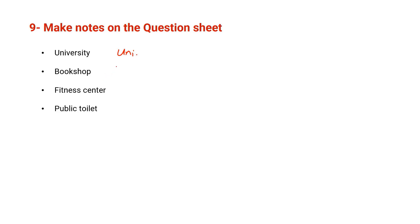So for example, a word like university, you can write it on the question sheet very quickly as uni, because you don't have time. Bookshop, you can write it like this. Fitness center, you can write for example fit and then sent. Public toilet, you can write it as pub and then toy. Just short form in order to save time, and then you can write your complete answer in the answer sheet.